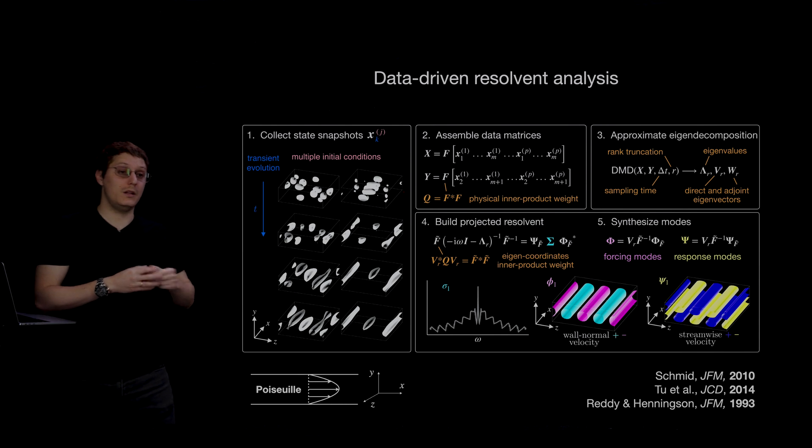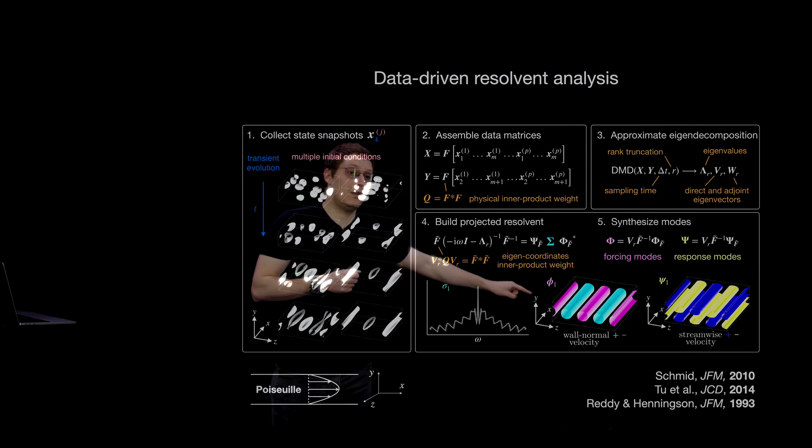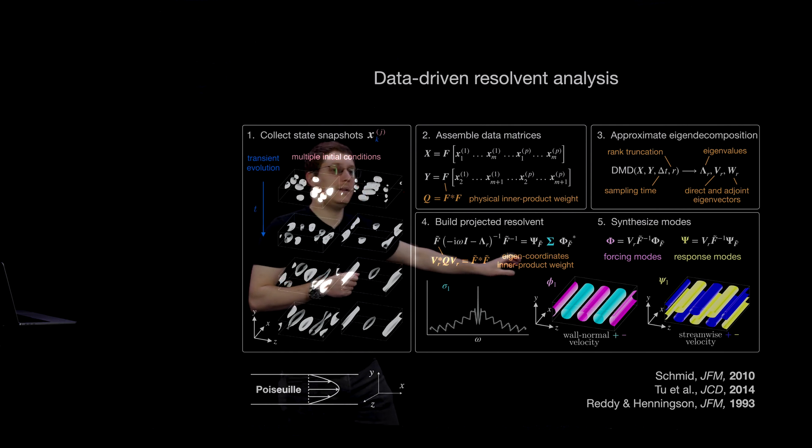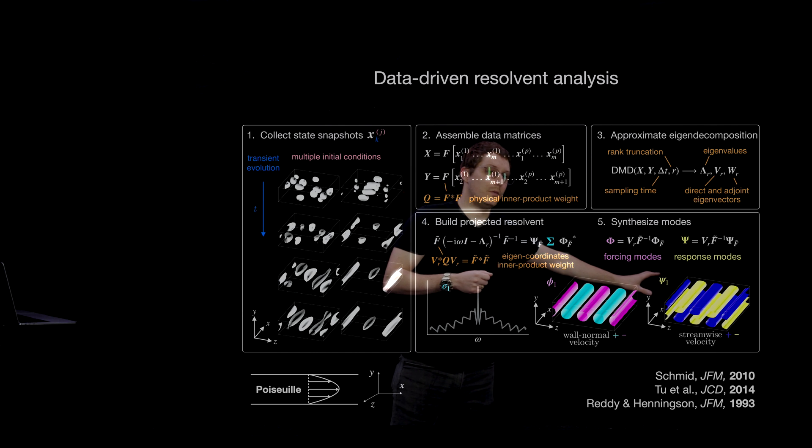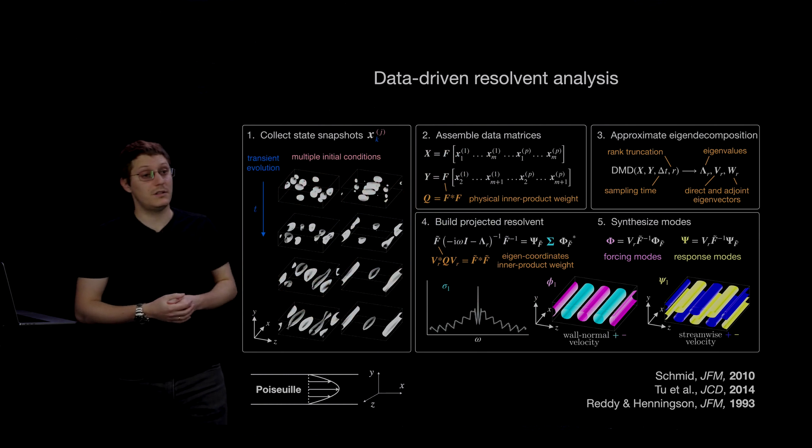And here I'm showing the optimal forcing, where I'm showing wall-normal velocity isosurfaces, and the optimal response for channel flow, where I'm showing streamwise velocity isosurfaces. So these are the familiar streamwise vortices causing streamwise streaks.